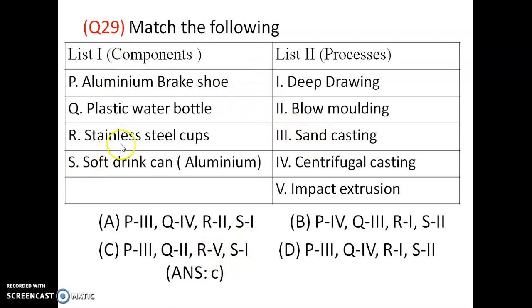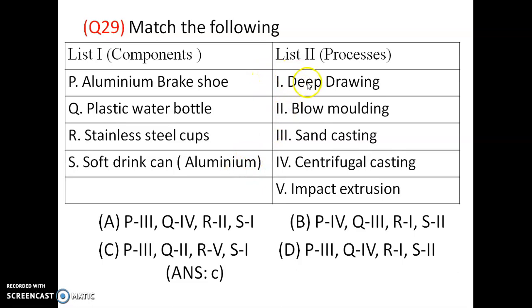Stainless steel cups are made by impact extrusion process. Soft drink cans are made by deep drawing process. The option is C.